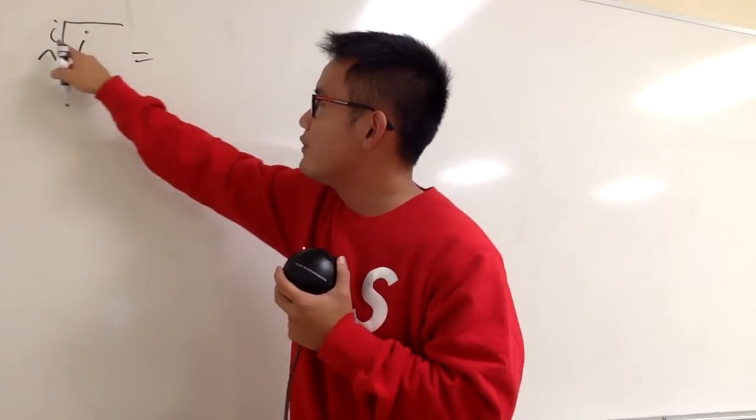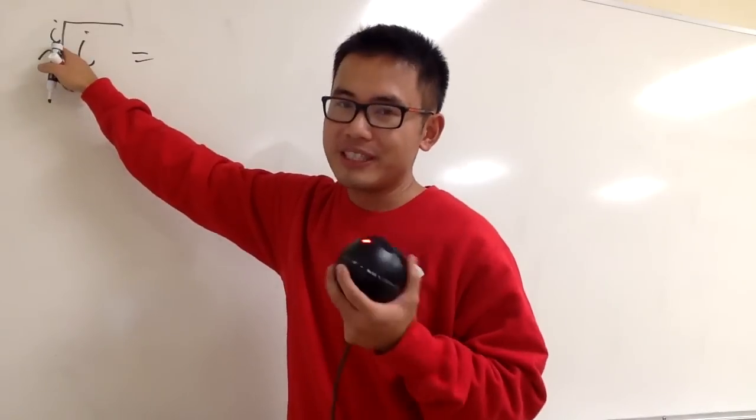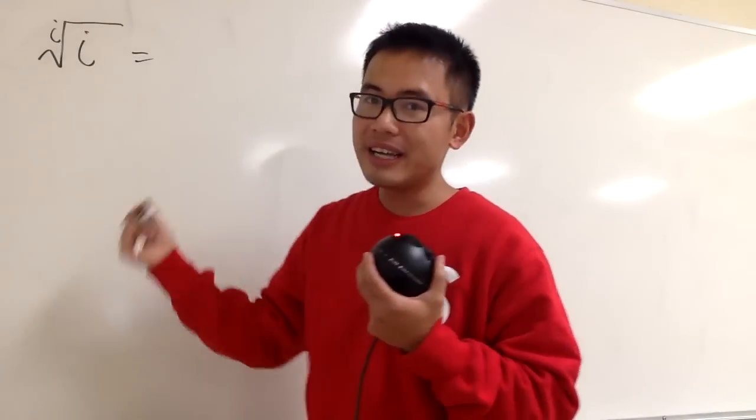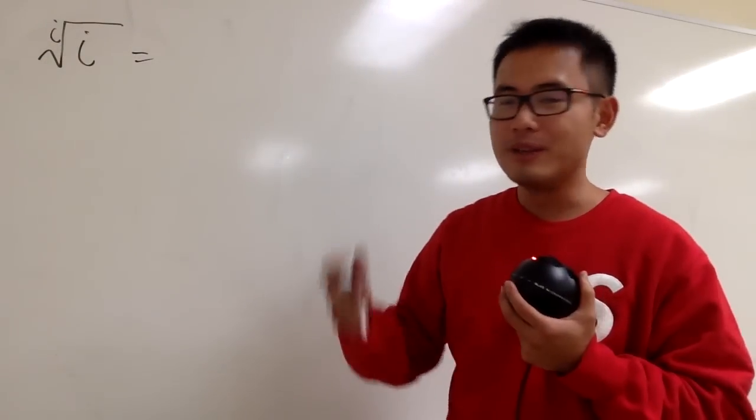So first of all, whenever we have whatever root, for example, the third root, in that case, we can write that down as a power form, 1 over 3 power, right?